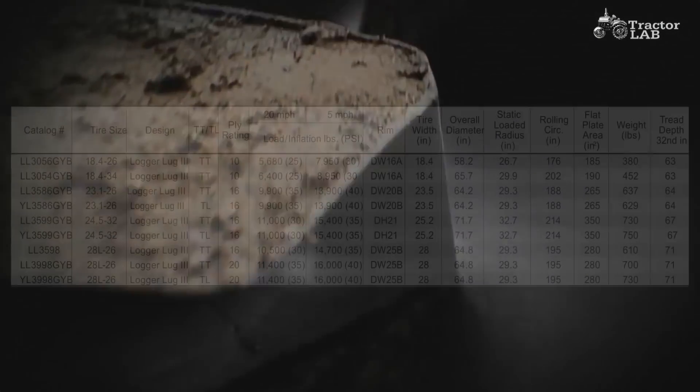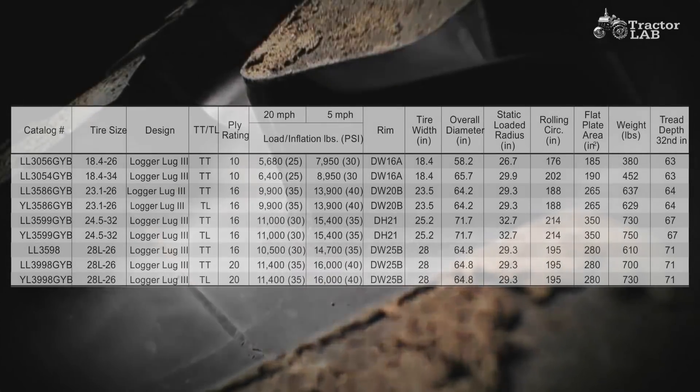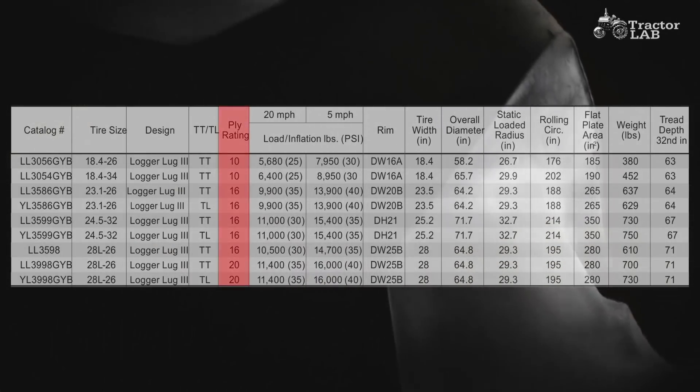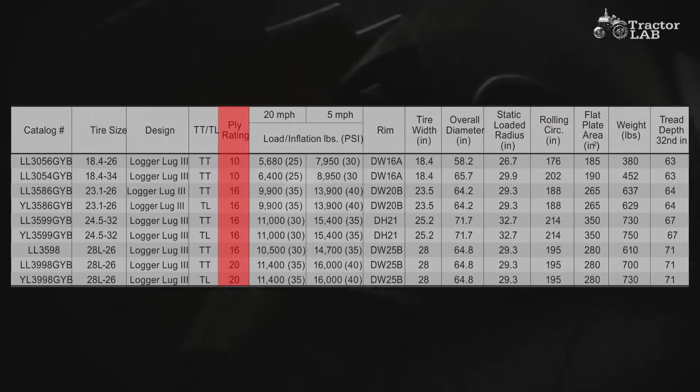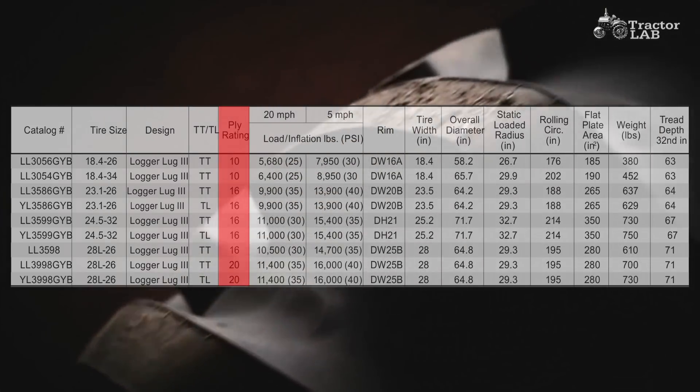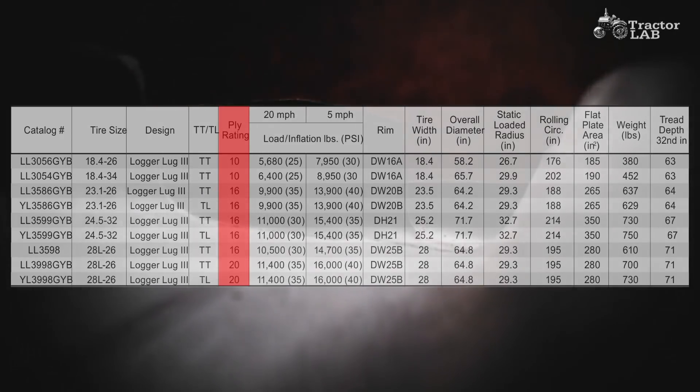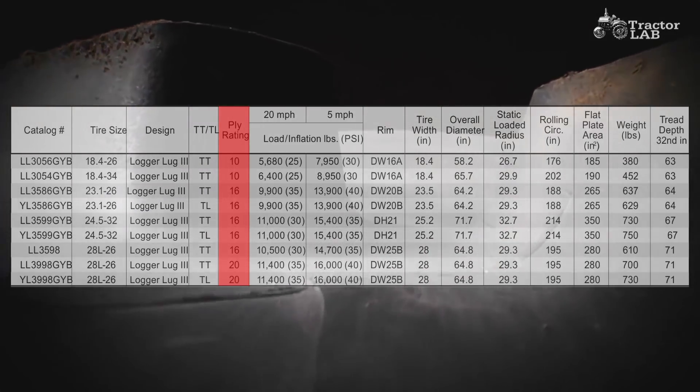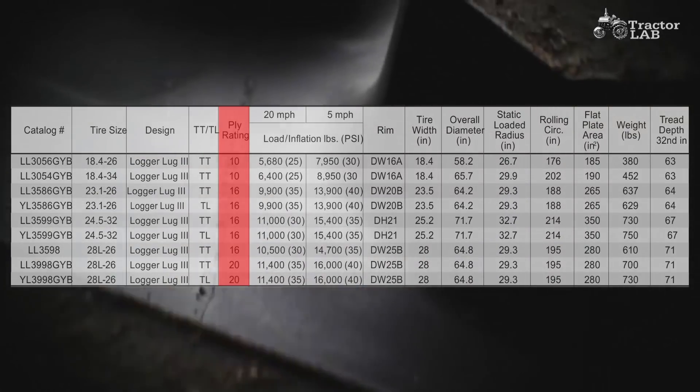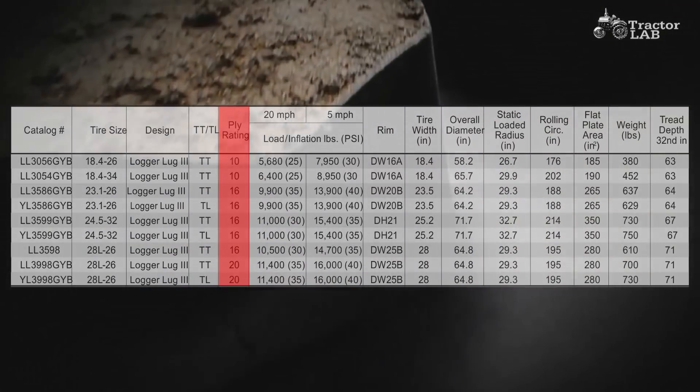Ply rating used by bias tires and some older radials. Ply rating is an indication of carcass strength and not the actual number of fabric plies in the tire. Maximum rated loads and pressures are different for each tire size with the larger tires operating at lower pressures for a given ply rating.